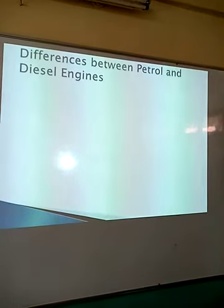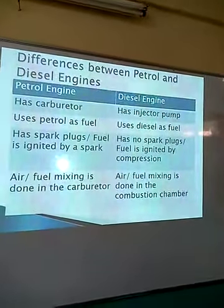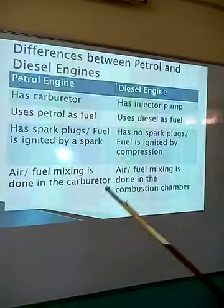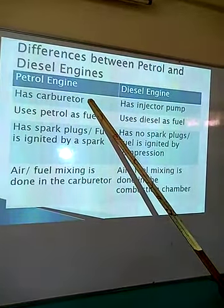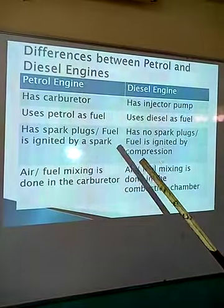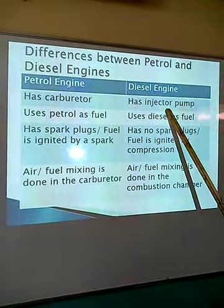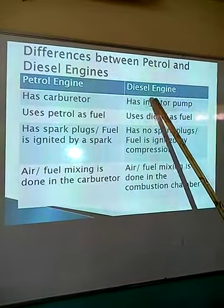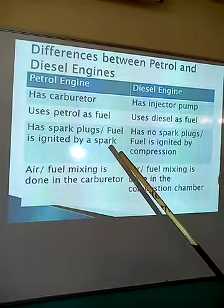Having said that, let us look at the tabulated differences between petrol and diesel engines. As we said earlier, petrol engines have a carburetor for the mixing and vaporization of fuel, as well as the mixing of that fuel with air. The diesel engine on the other hand has an injector pump — they don't have a carburetor. They have an injector pump that ensures the diesel is injected into the combustion chamber.